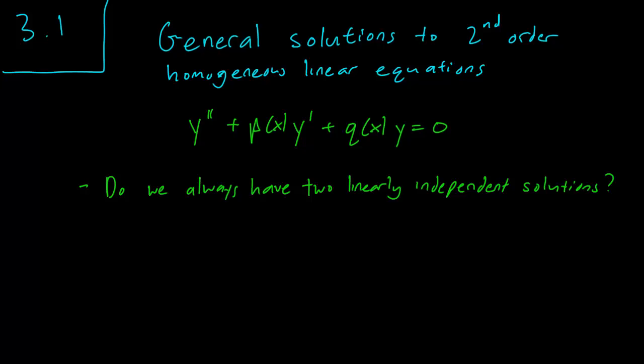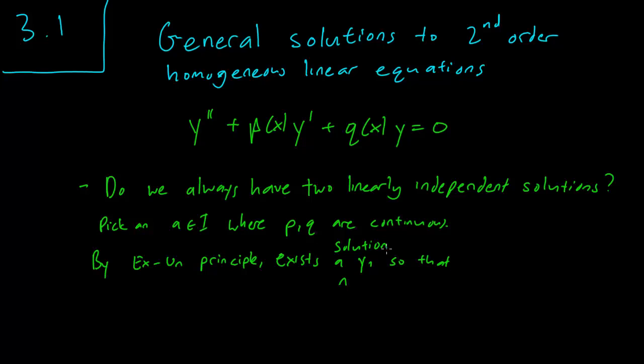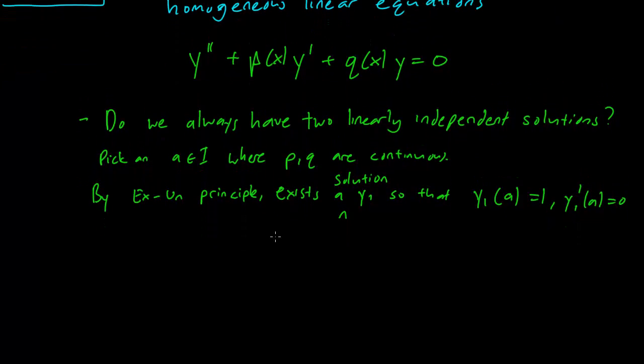So here's how you can see that. Let's pick a solution y1 so that y1(a) equals 1 and the derivative at a equals 0. And there also exists a solution y2 so that y2(a) is 0 and y2 prime at a is 1.